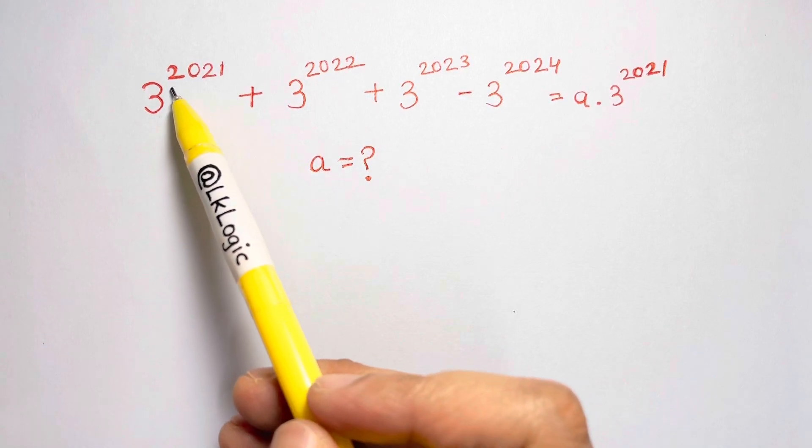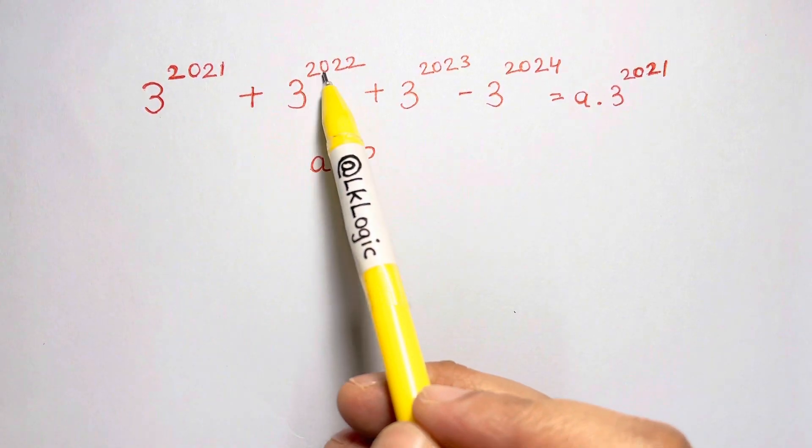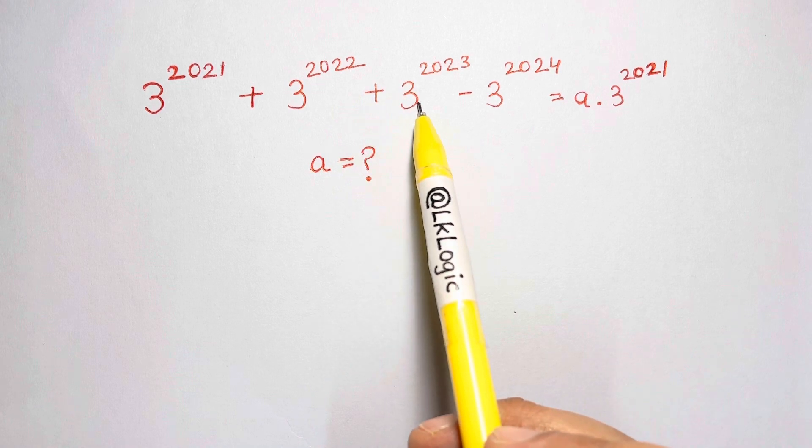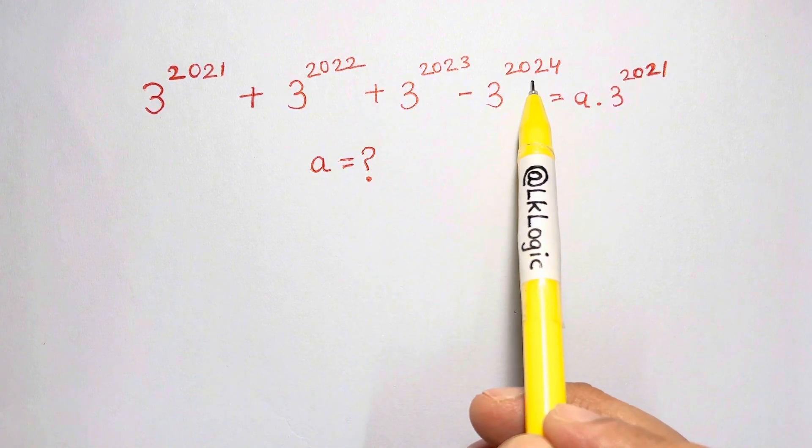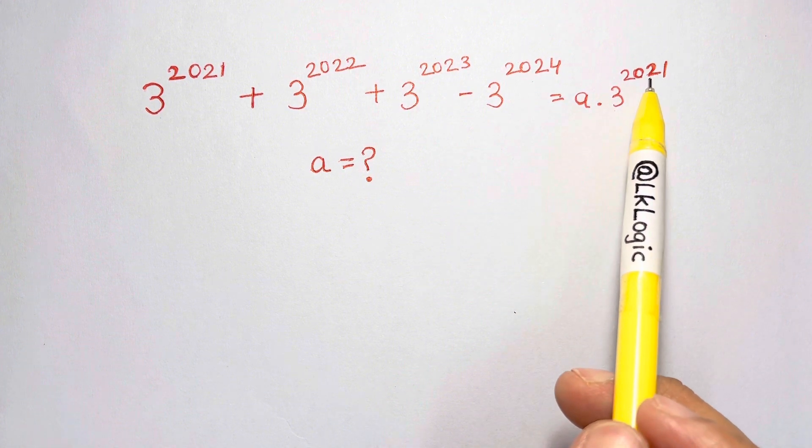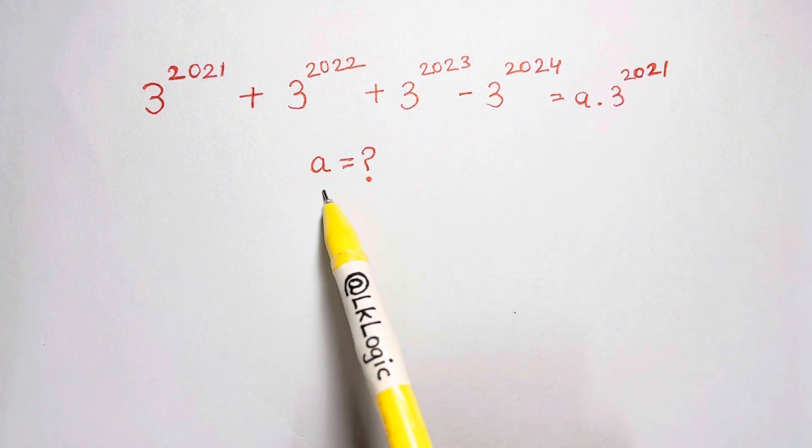Hi guys, what's 3 to the power of 2021 plus 3 to the 2022 plus 3 to the 2023 minus 3 to the 2024 equals A times 3 to the 2021? So what is the value of A here?